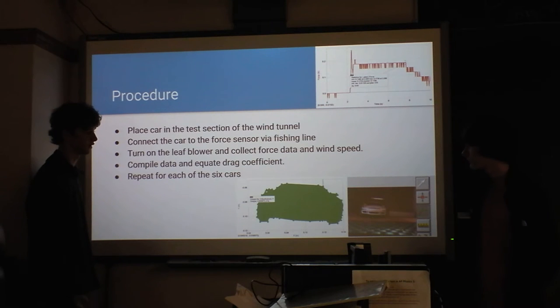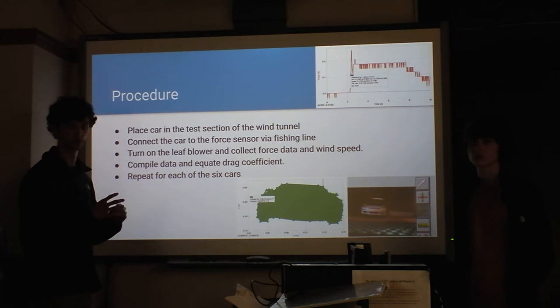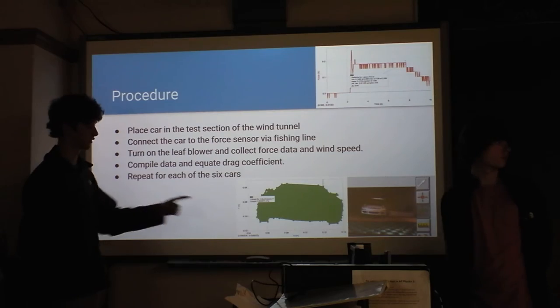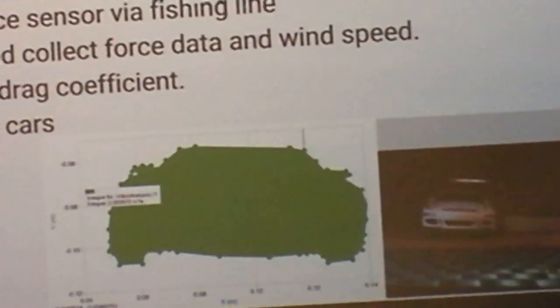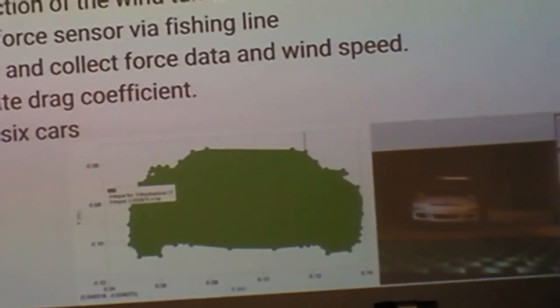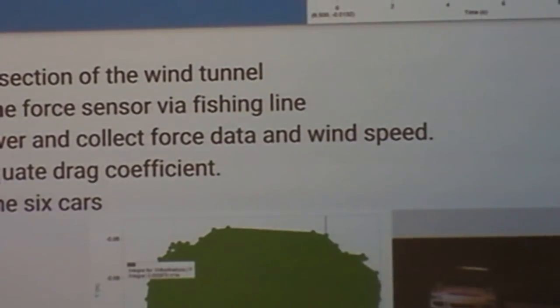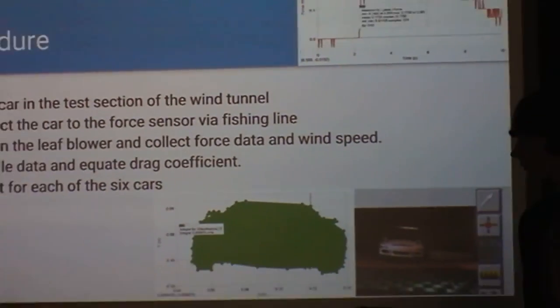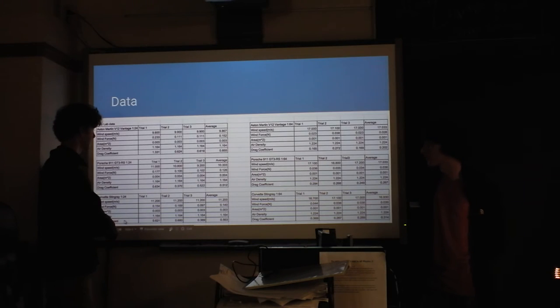To find the surface area — the area being hit by the wind — we took a picture of the car and used Logger Pro's image analysis to get the area of the front of the car. You can just take a picture, do graphical analysis like we've done before, take the integral, and it does it. It's really nice.